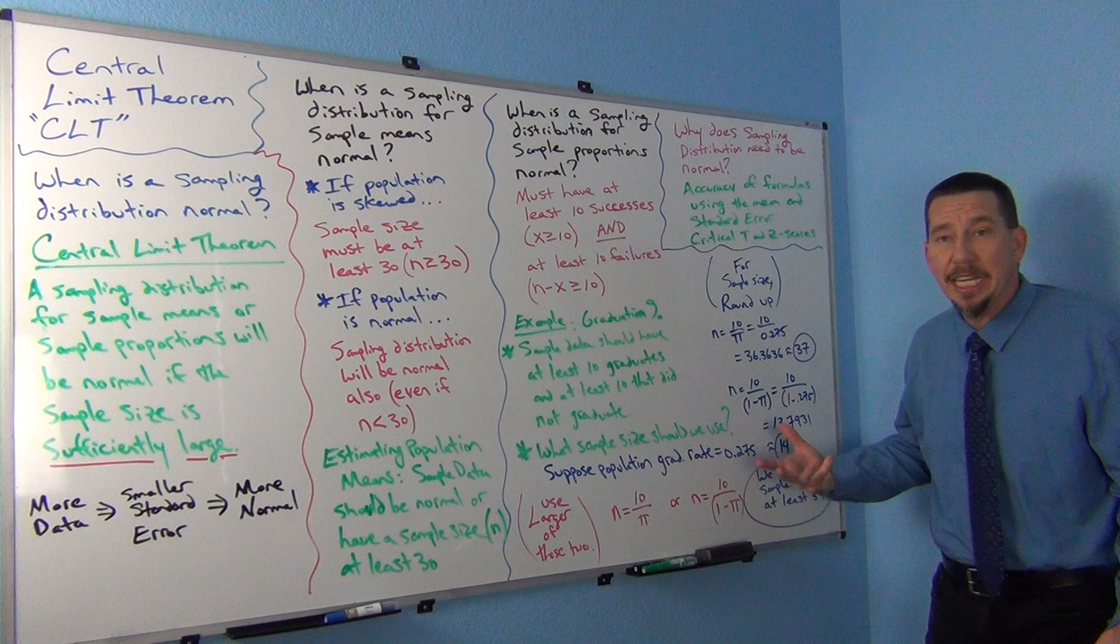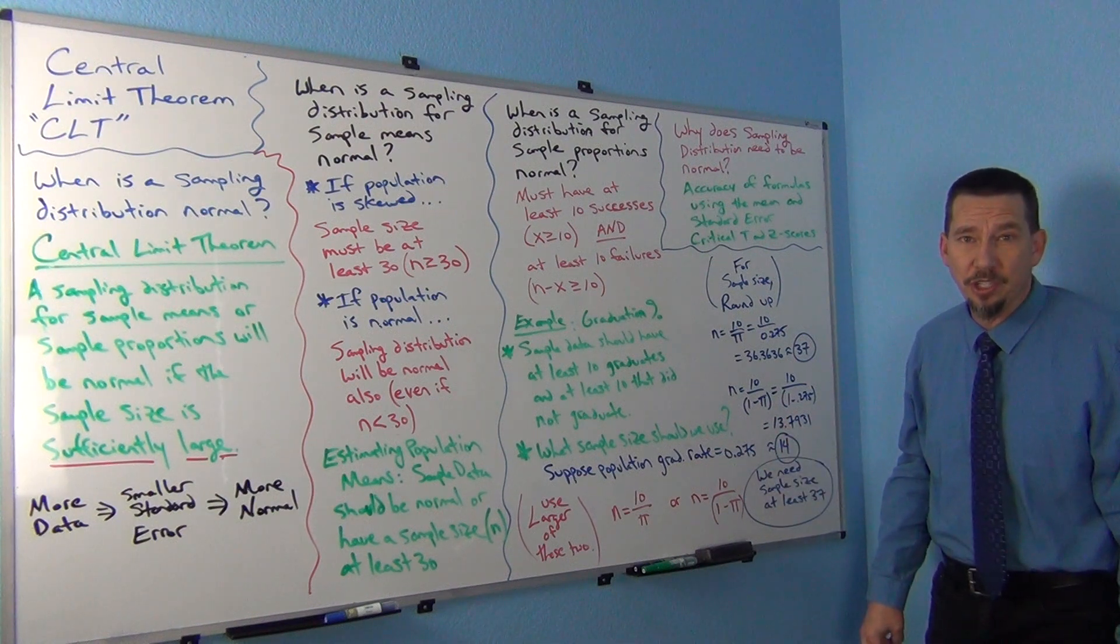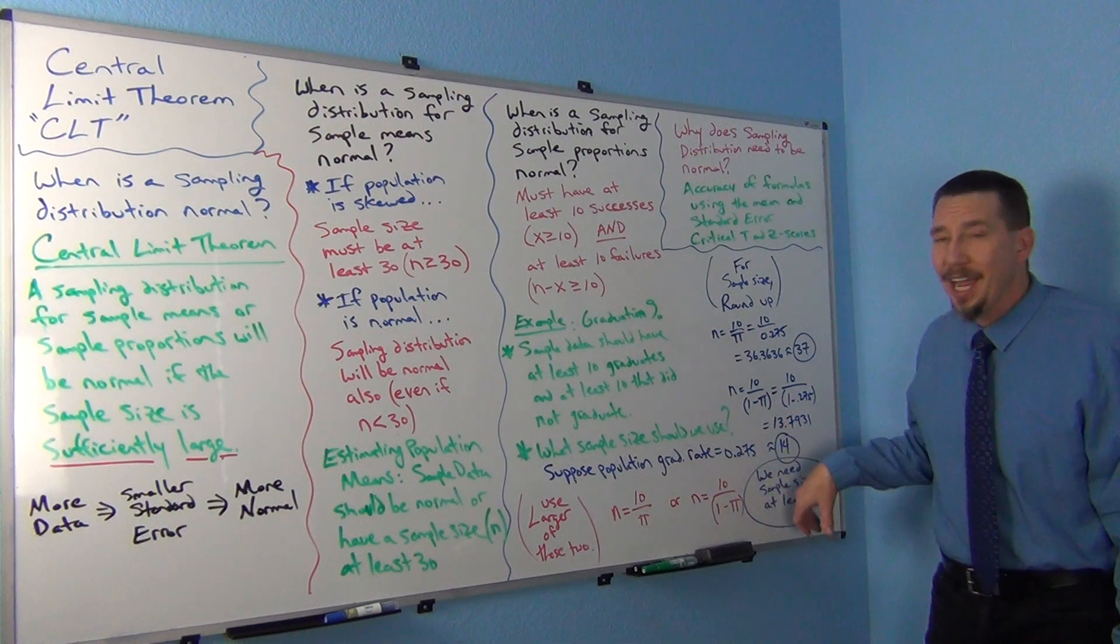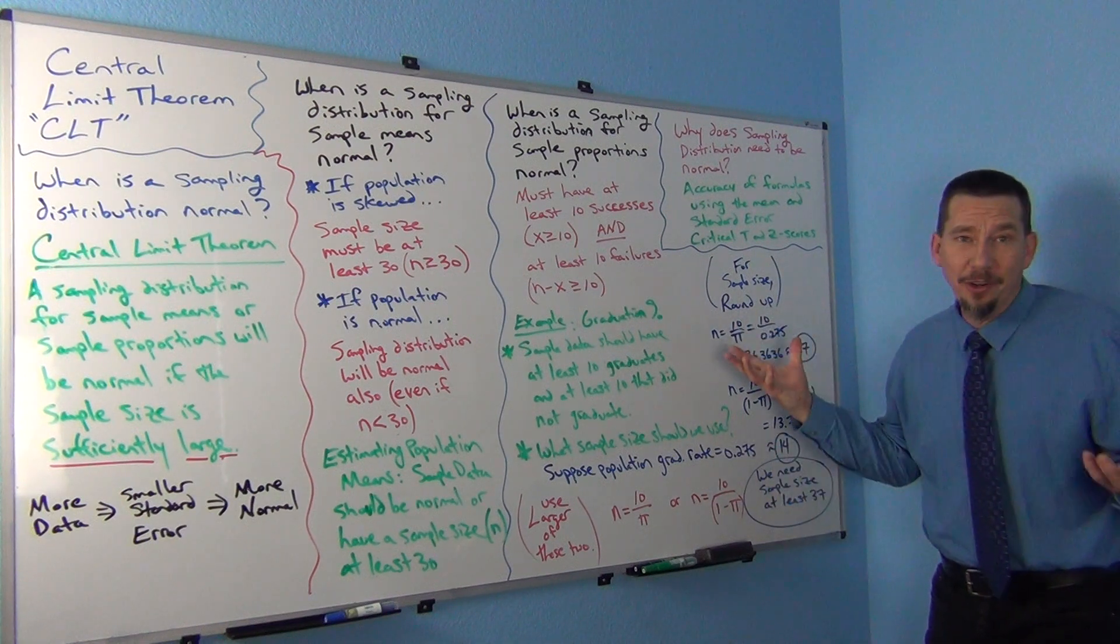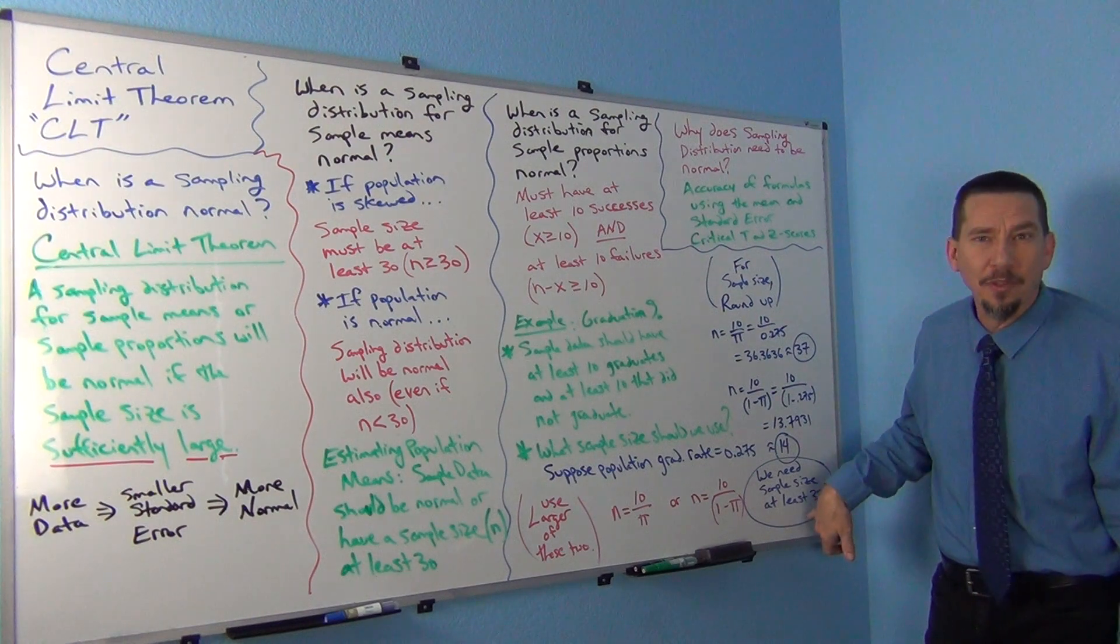So in this case we needed a sample size of 37 for the sampling distribution to look normal. I think when we tried it in StatKey, we tried a sample size of 100 and it was way normal. So notice that was over 37.